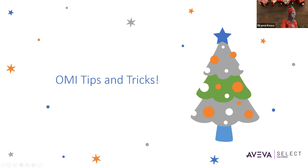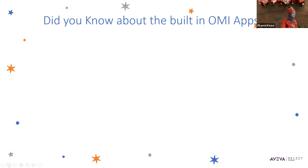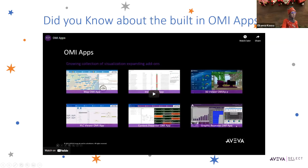In this section we will cover the Operation Management Interface tips and tricks. The first one is related to the built-in OMI apps — these are out-of-the-box apps. An OMI app is a collection of one or more controls with specific functions and capabilities. Apps can be used as content in an Operations Management Interface view app to provide various types of information based on their function.